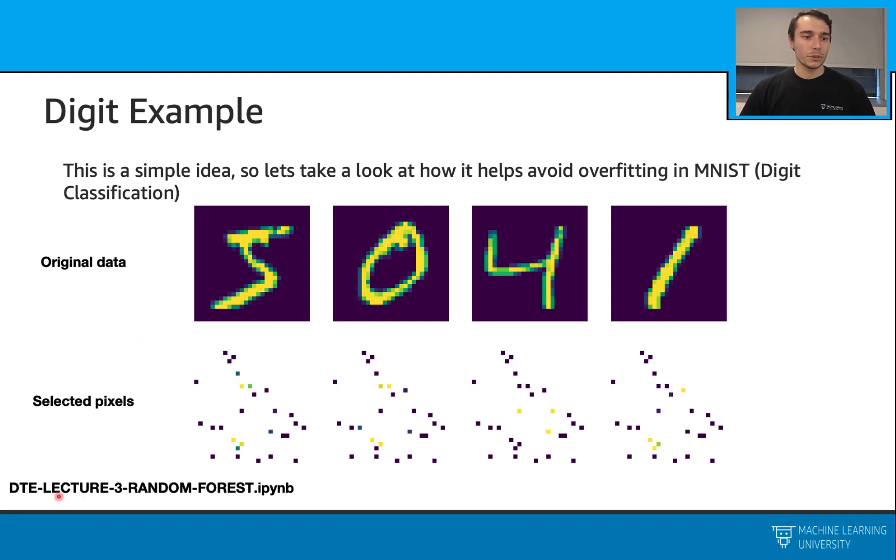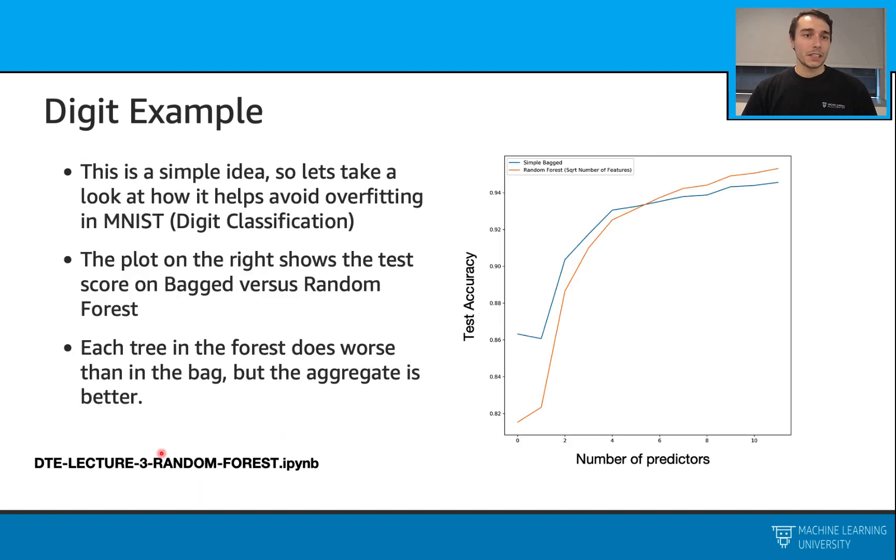We also have a notebook on this. We will go through this notebook afterwards. In this exercise, we are specifically comparing a random forest model with a simple bagging model, and we are looking at the overfitting problem one more time.